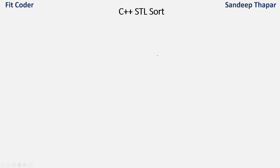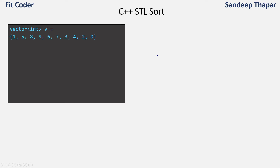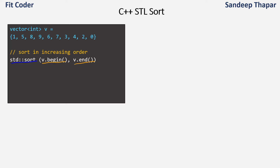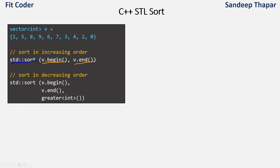Now let's look at the sorting function provided in the C++ STL library. Given a vector, array, or list of 10 elements, if we want to sort in increasing order we use std::sort, providing the begin and end iterators. To sort in decreasing order we can provide a comparator function. These cover simple cases, but there can be situations where we want sorting based on custom operations, in which case we write our own custom comparator.